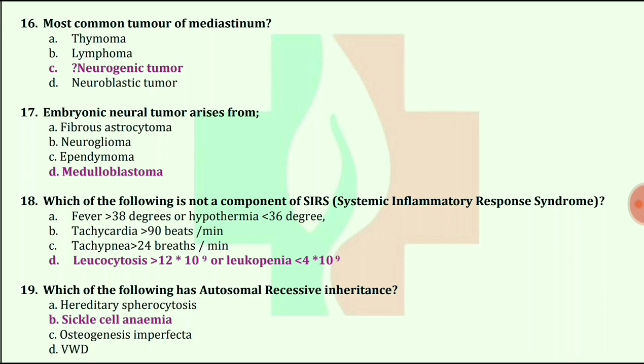Which of the following has autosomal recessive inheritance? Answer is sickle cell anemia.